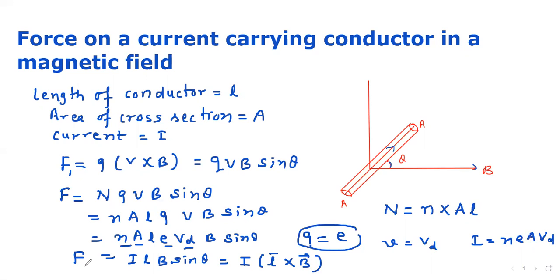Now, if we want to find out maximum and minimum value of the force, F minimum will occur when theta is either 180 degrees or 0 degrees, so it will be 0. And F maximum will occur when theta is 90 degrees because sin 90 is 1, so B I L.